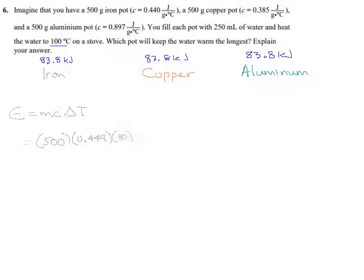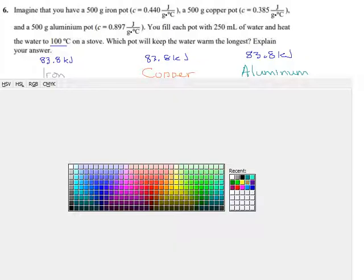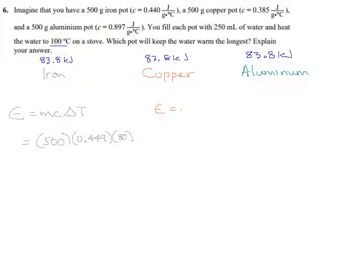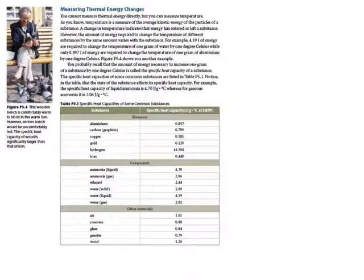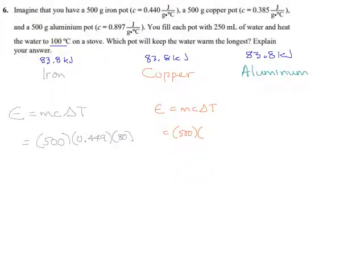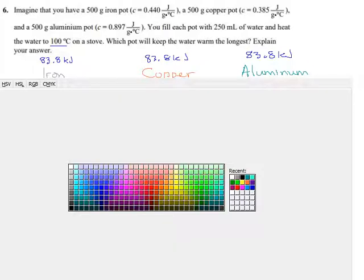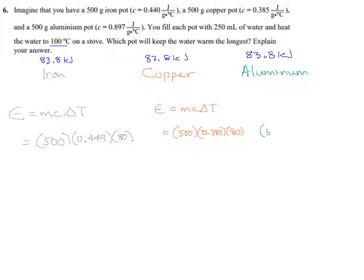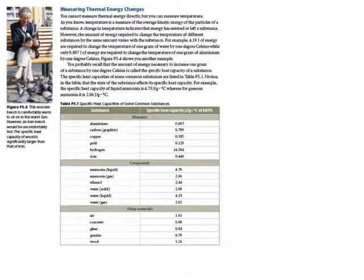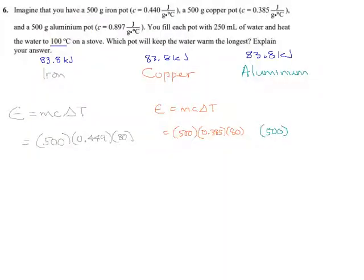Now I'm not going to finish that, and you'll see why in just a moment. I'm going to set up the other two, and then we'll see if maybe we can shortcut this a little bit. For copper, same formula applies. Our mass is 500 again. The specific heat for copper is, is it here? 0.385. Temperature change is 80. And finally, we have our aluminum pot, where mc delta t will be 500. The specific heat for aluminum is 0.897. And the temperature change is 80 again.